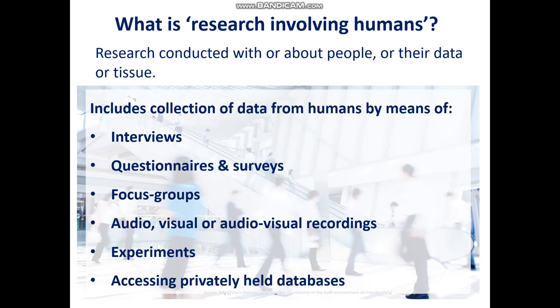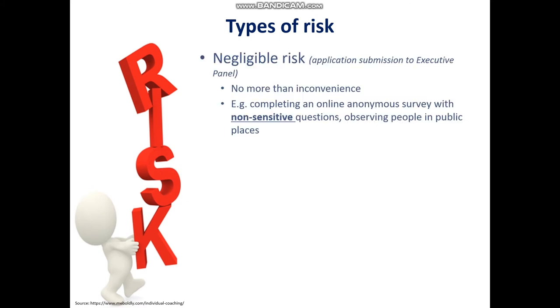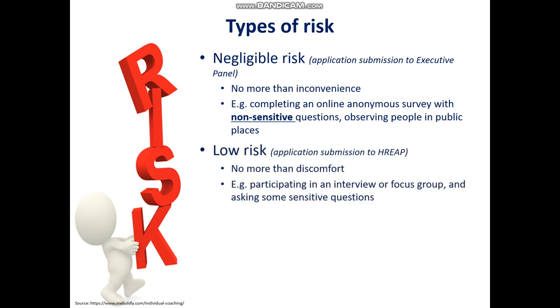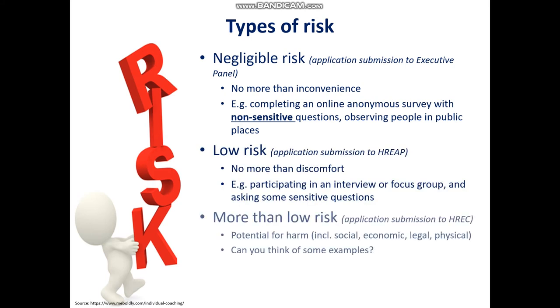Research involving humans can include interviews, questionnaires or surveys, focus groups where you get a bunch of people in a room and ask the same questions at the same time, recordings, experiments, getting people to test out things you've designed, trying virtual environments, or accessing databases that are off the public record. Ethics at UNSW is really all about risk — very much about applied ethics. We're concerned about risk rather than the deeper philosophical concerns of ethics.